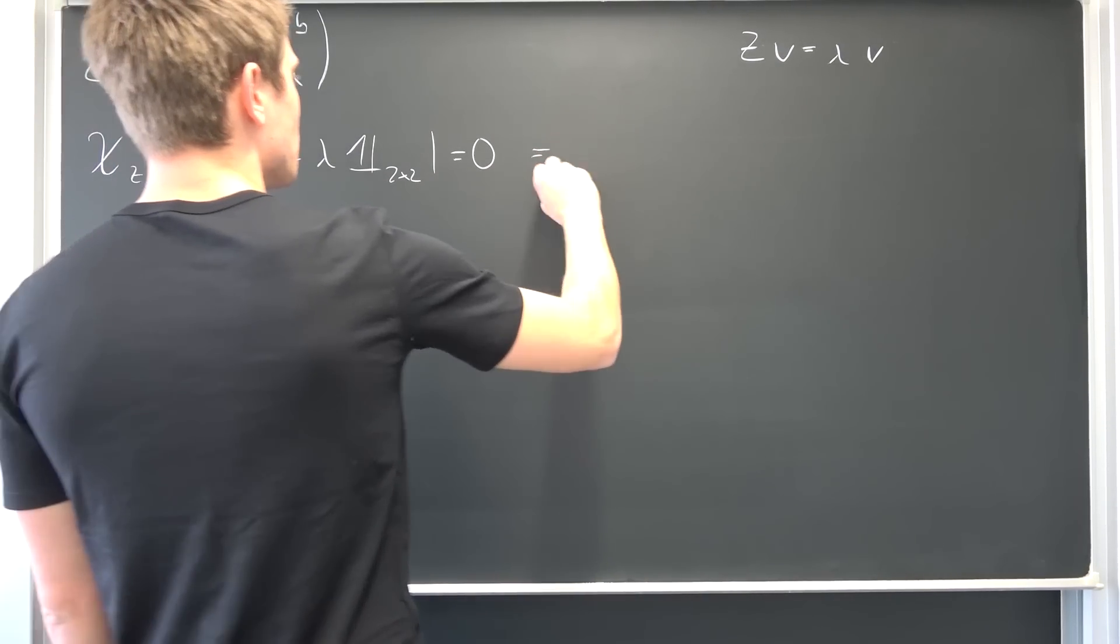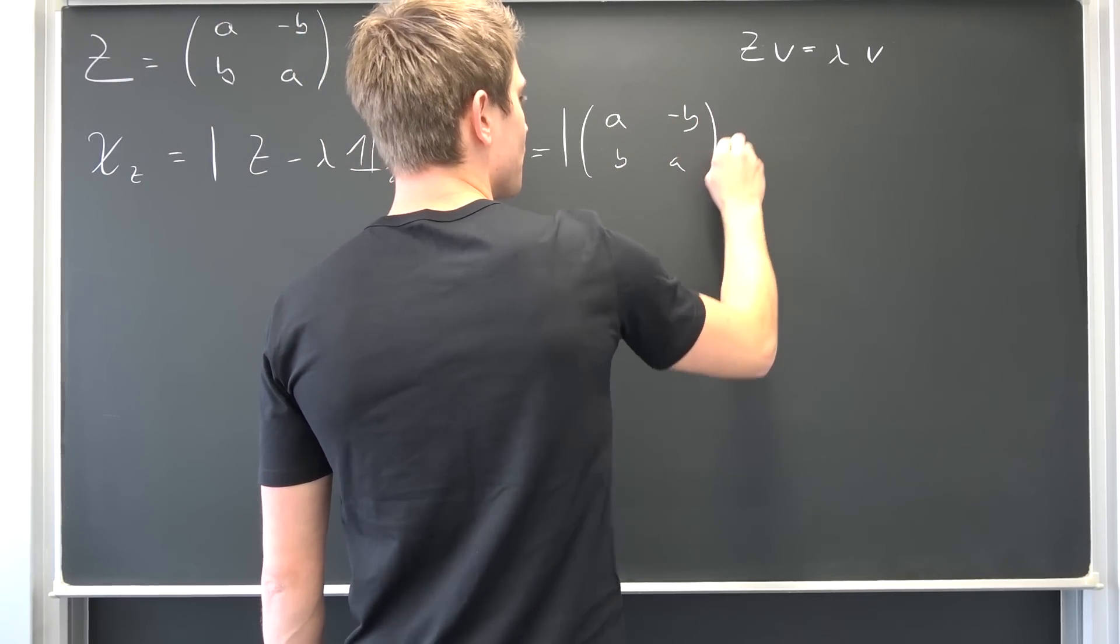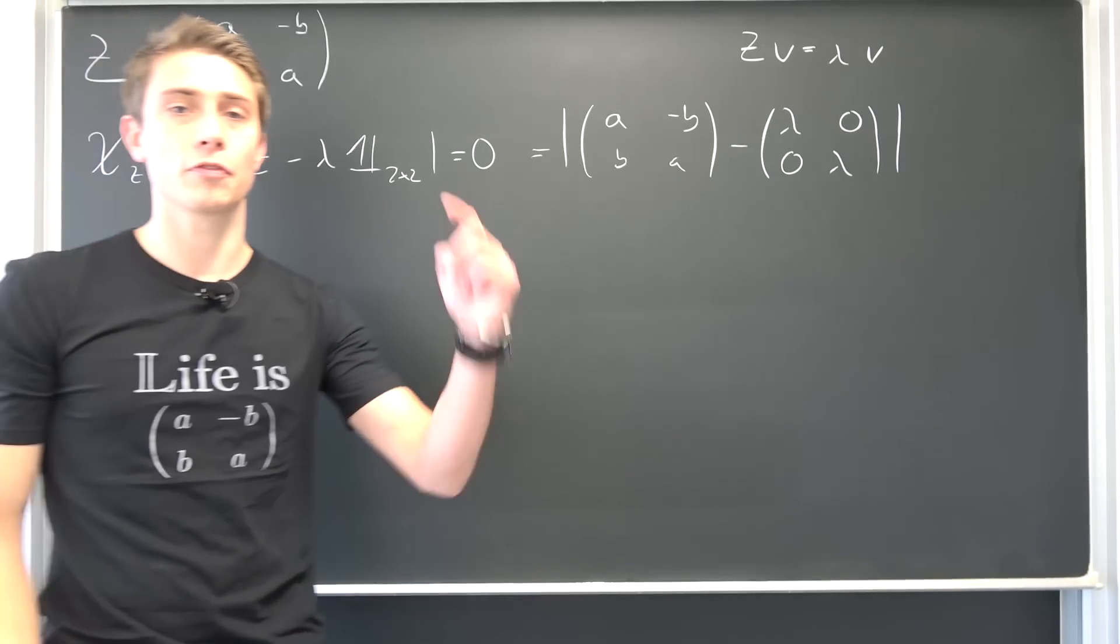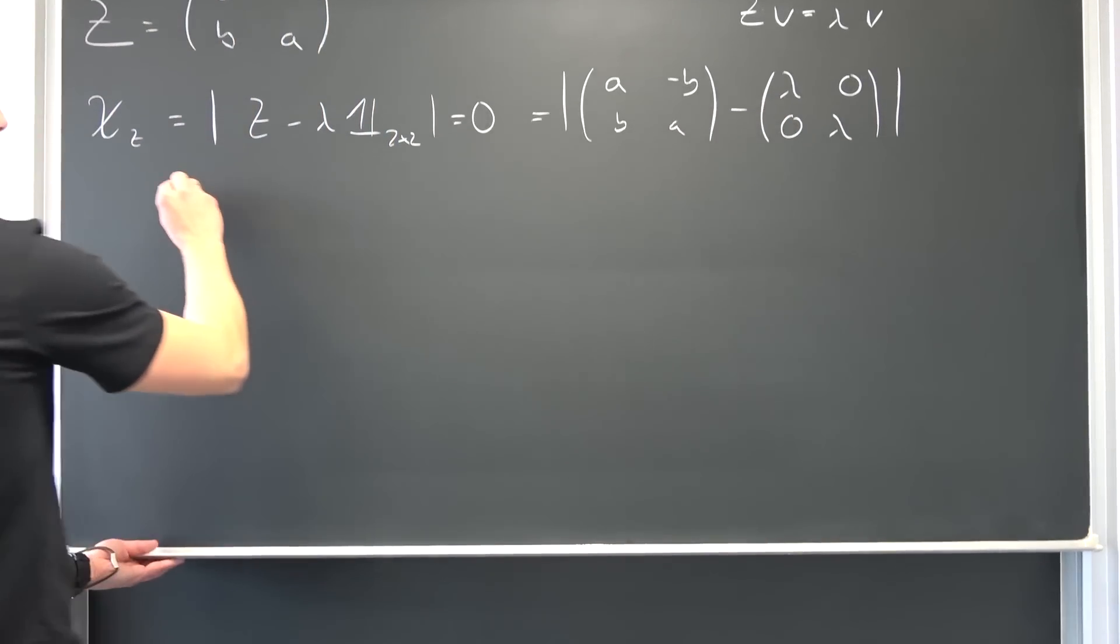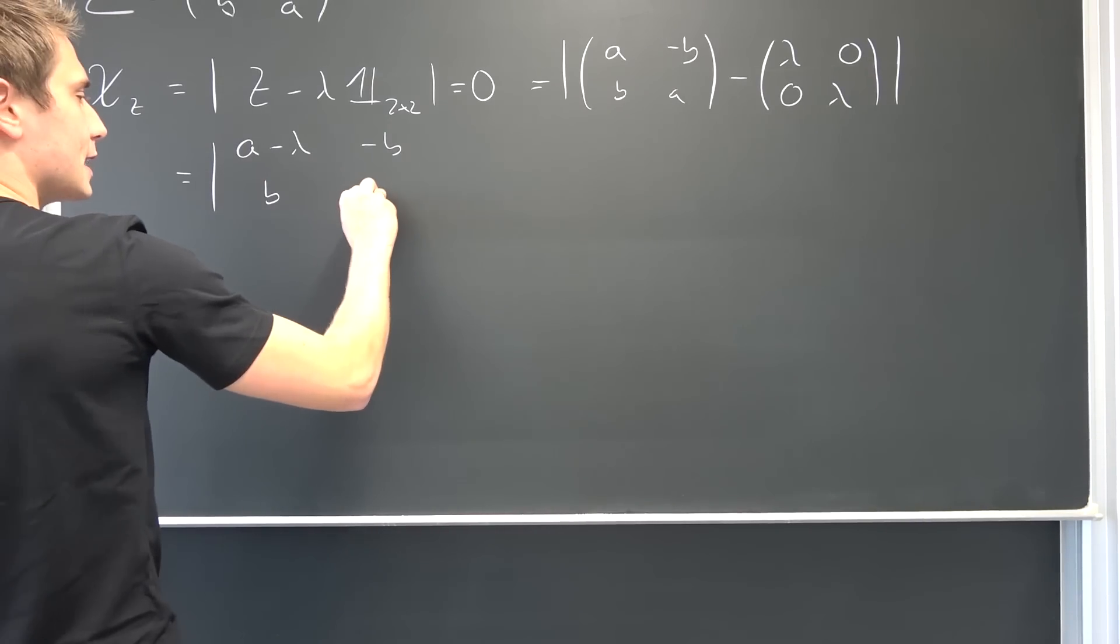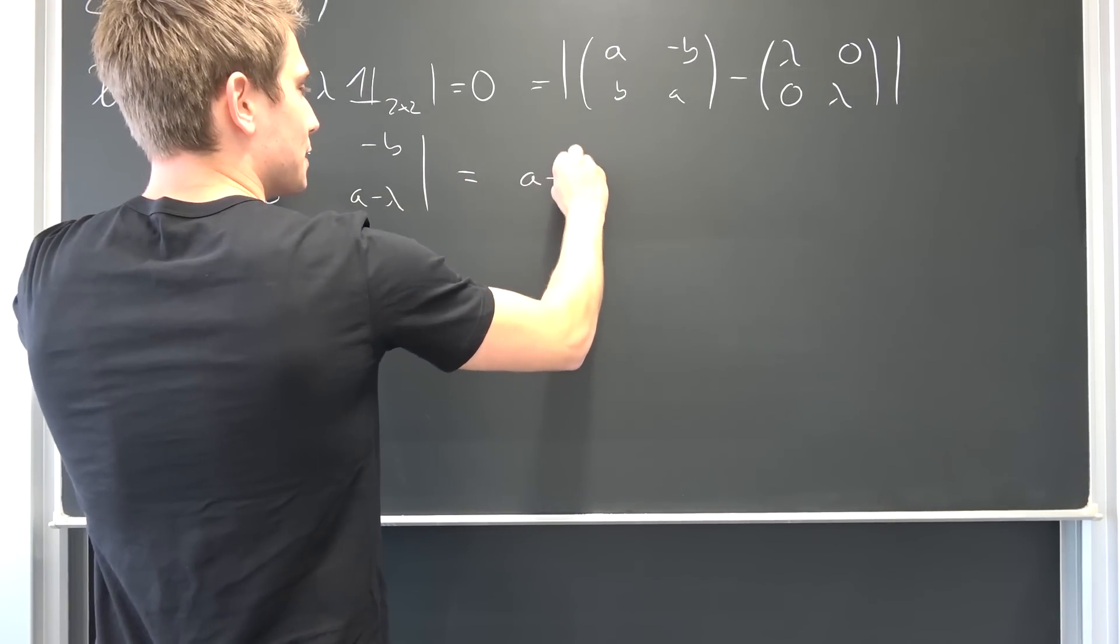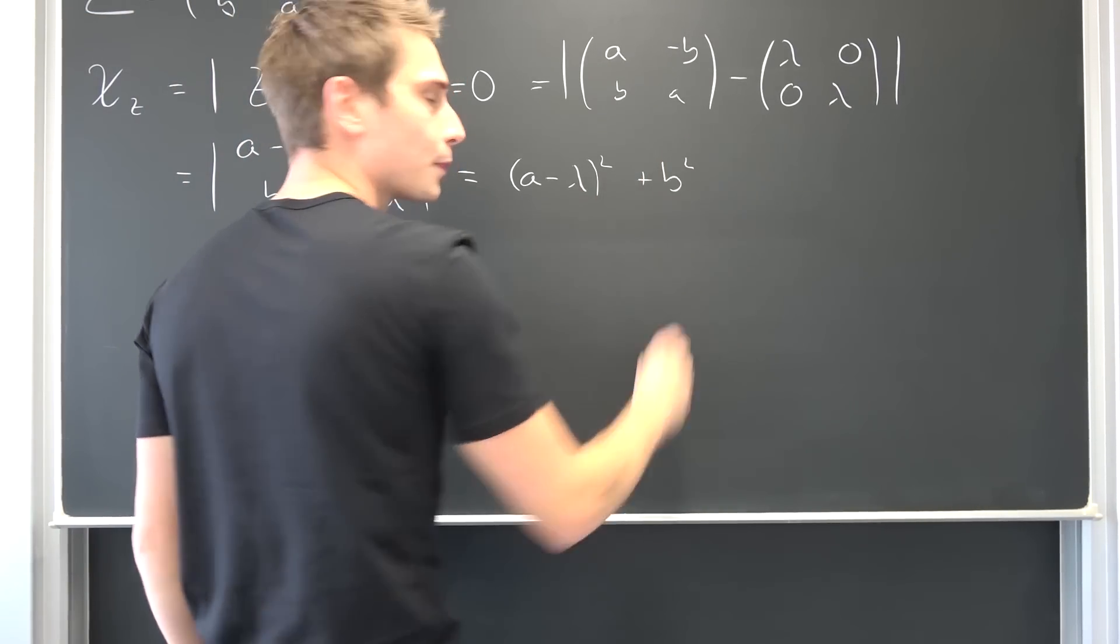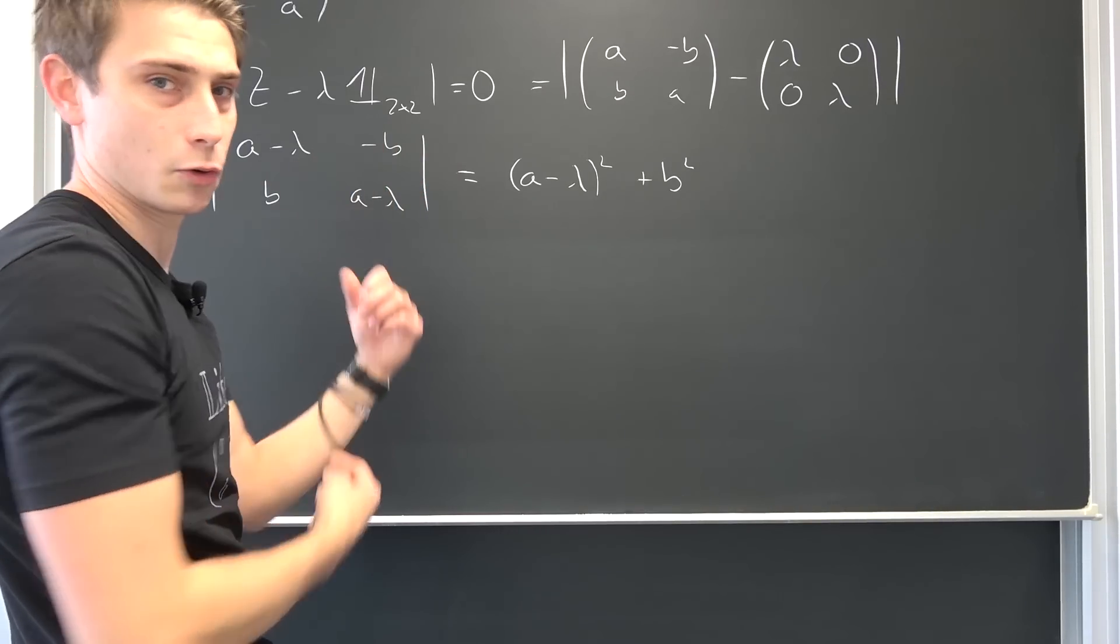If we were to write all of this out, we would end up with the determinant of this thing: a negative b, b and a, minus lambda zero zero lambda. We have a two by two matrix meaning we are going to end up with two eigenvalues. Now addition is defined pointwise, meaning we are going to end up with the determinant of a minus lambda, negative b, b and a minus lambda. Now determinant of this thing is those multiplied together, meaning this is going to give us a minus lambda squared, or lambda minus a squared really doesn't quite matter, plus b squared. We want this to be equal to zero, meaning we are going to subtract b squared on both sides.